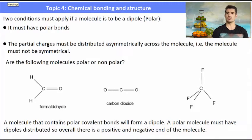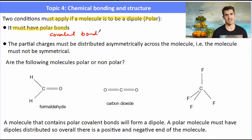For a molecule to be polar, it must have polar covalent bonds with a difference in electronegativity between the two atoms. Those partial charges must be distributed asymmetrically across the molecule, so there has to be an overall positive and negative end.